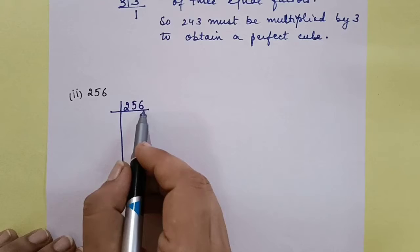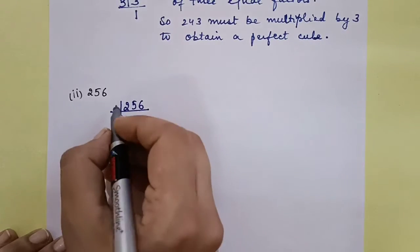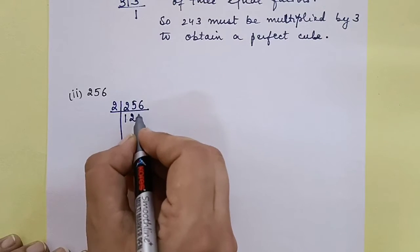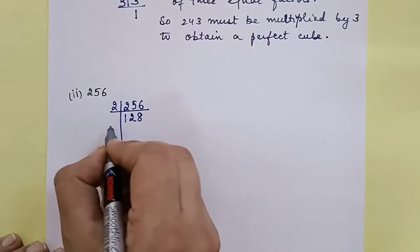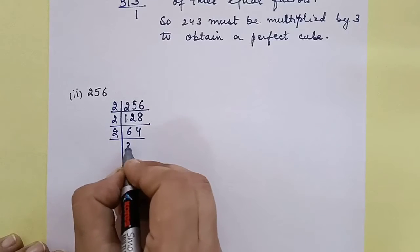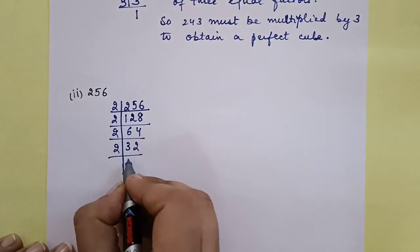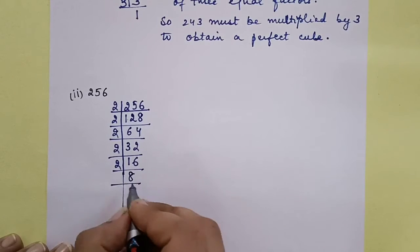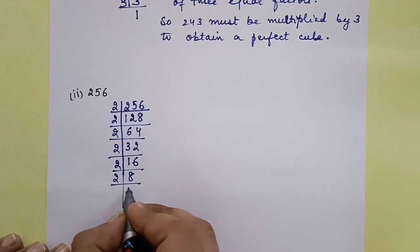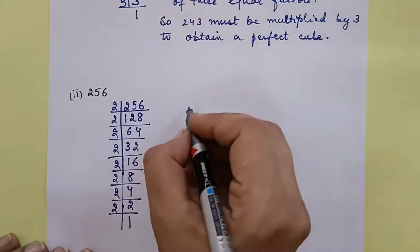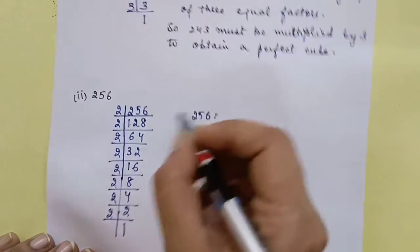Now see, what is at the last unit place? It's 6, so it will be divisible by 2 first. Dividing 256 by 2 repeatedly: 256 ÷ 2 = 128, ÷ 2 = 64, ÷ 2 = 32, ÷ 2 = 16, ÷ 2 = 8, ÷ 2 = 4, ÷ 2 = 2, ÷ 2 = 1. Now let's write the factorization.